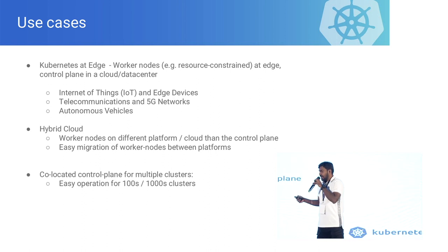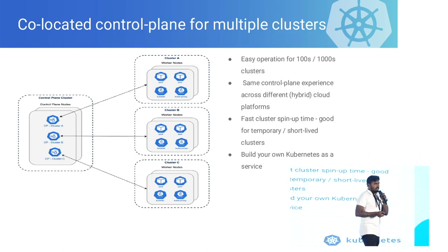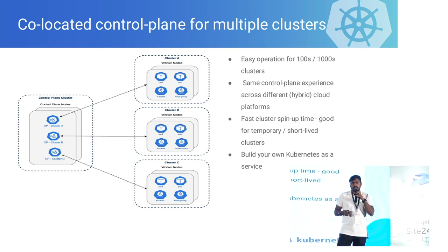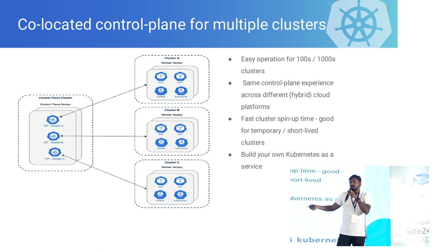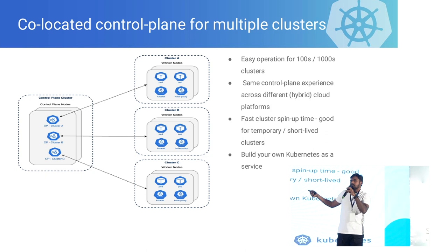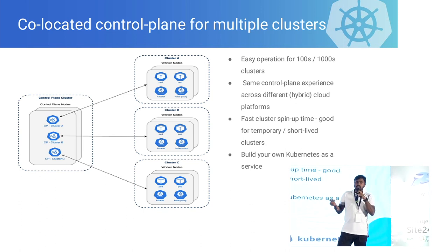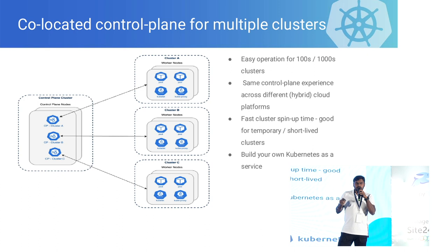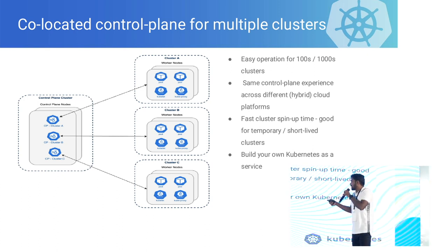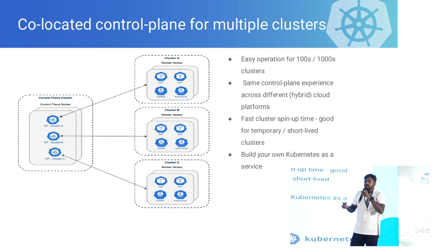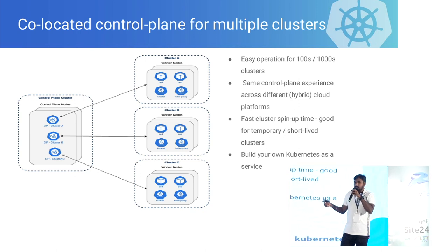Another use case is the co-located control plane, similar to what was discussed earlier about open cluster management. For multi-cluster management, you have a control plane cluster where you run all your control planes and you have worker nodes or clusters which are tenant-aligned. The tenant might be any user running on-premises or in the cloud. The SaaS provider spins up worker nodes in the tenant's account or VPC and runs the control plane in their own premises, providing cluster-as-a-service.